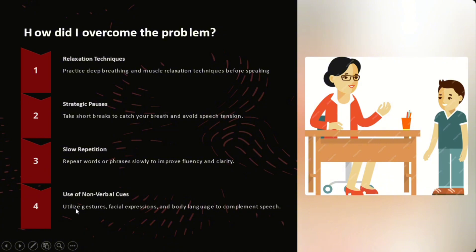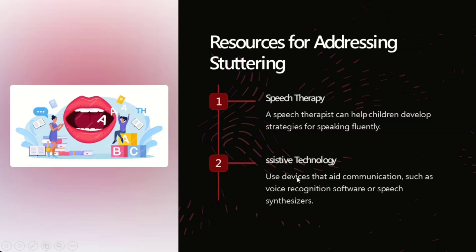Number 4: Using non-verbal cues. Use gestures, facial expressions, and body language to complement speech. Resources for addressing stuttering. Number 1: Speech therapy. A speech therapist can help children develop strategies for speaking fluently. Number 2: Assistive technology. Use devices that aid communication, such as voice recognition software or speech synthesis.